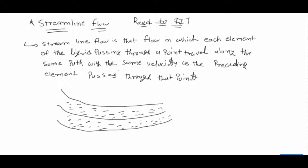Please note this: the same velocity as the preceding element passes through that point. I have drawn the streamline flow diagram so you can understand easily. This is the basic definition of streamline flow — you can see there are three different paths.